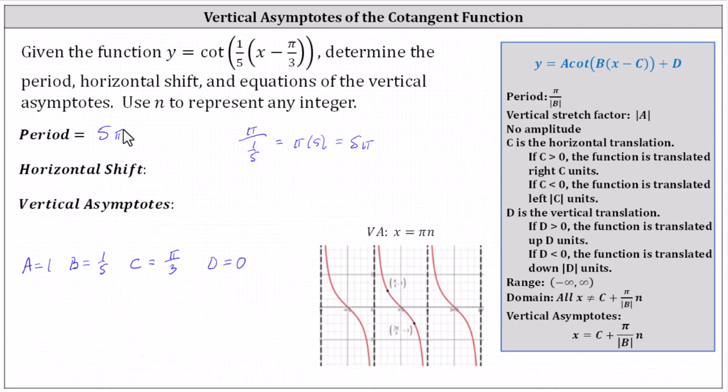Next, the horizontal shift, or phase shift, is determined by the value of c. Because c is positive pi divided by three, or greater than zero, the function is translated right c units, or in our case, right pi divided by three units.